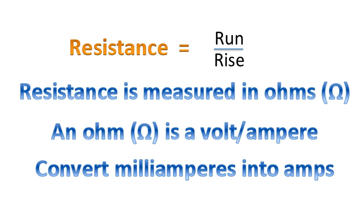So resistance, once again, is run over rise. And resistance is measured in a unit called the ohm. The symbol for ohm is the Greek letter omega. An ohm is a volt per ampere. So before you do your final calculation, you will need to convert milliamperes into amperes.